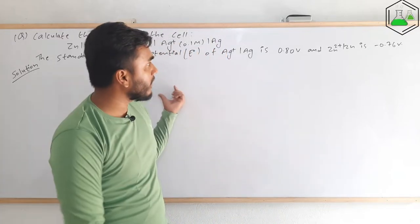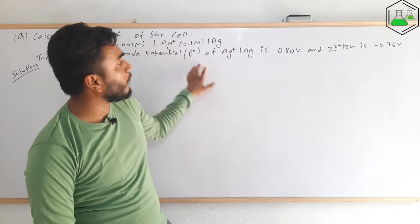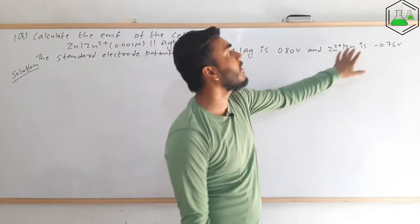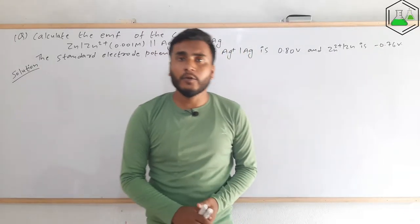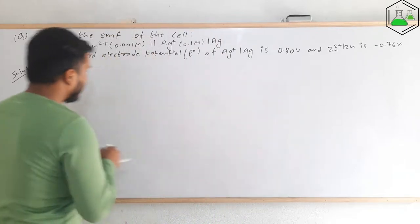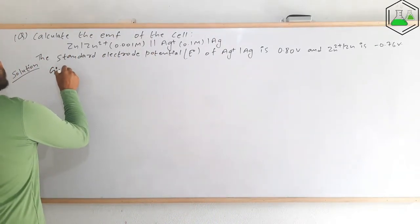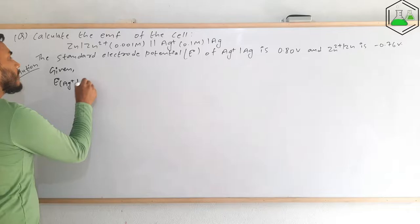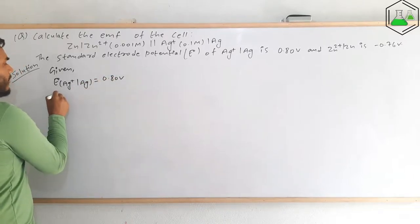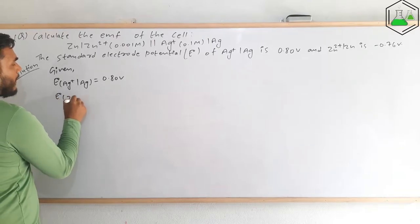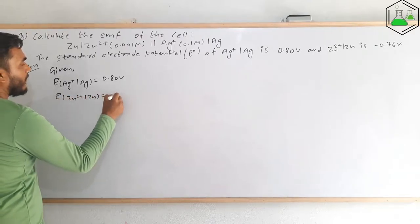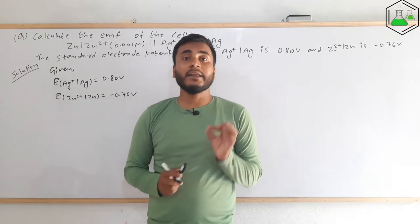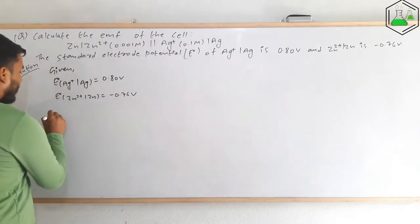Two given conditions are provided: the standard electrode potential of the silver electrode is 0.80 V, and that of the zinc electrode is −0.76 V. So, E°(Ag⁺/Ag) = 0.80 V and E°(Zn²⁺/Zn) = −0.76 V. These are the two given values.